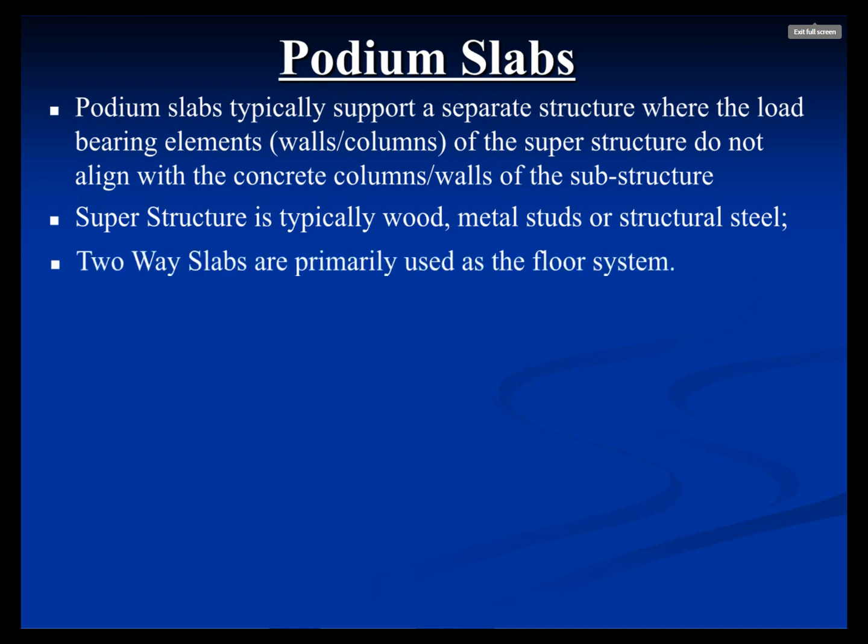There is no direct load transfer between a steel column or wood post right on top of a concrete column — it's usually out in the middle of the mid-span somewhere. So the slab itself is transferring all the vertical and lateral load to the columns. In a perfect world, if you could put all your posts on the concrete columns the slab wouldn't be doing very much, but that doesn't work out, especially when you have bearing walls at 12 or 14 feet on center.